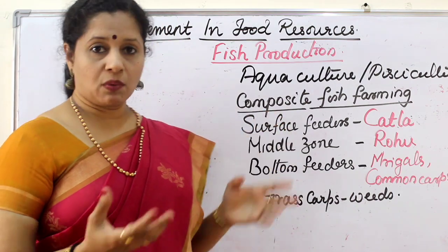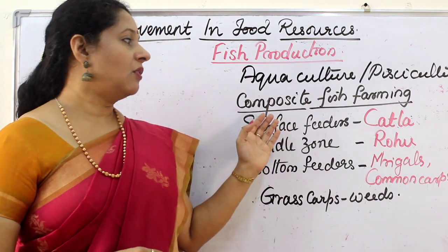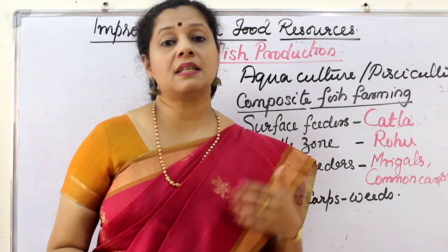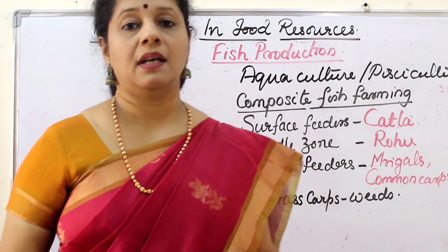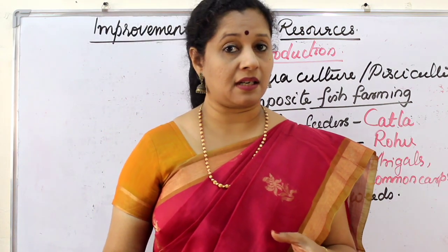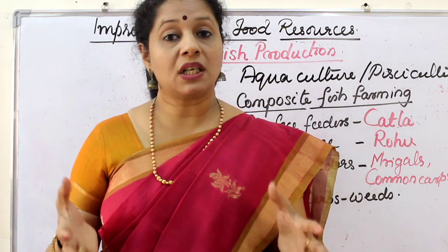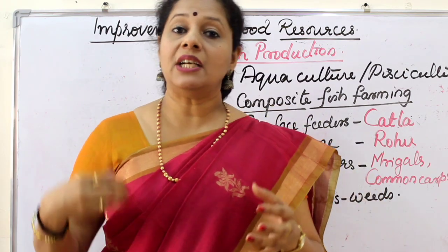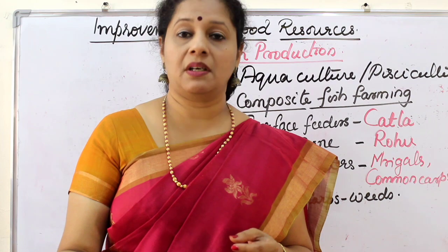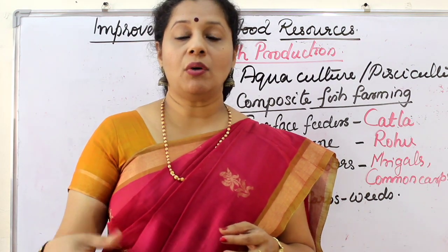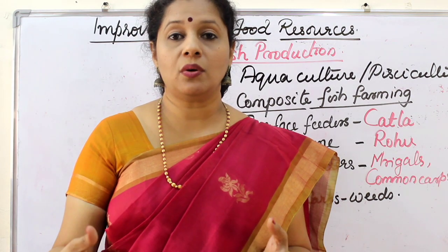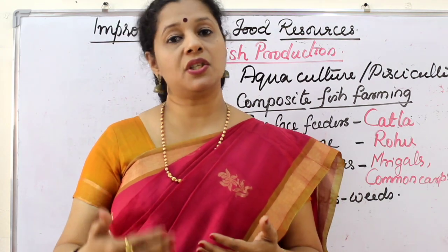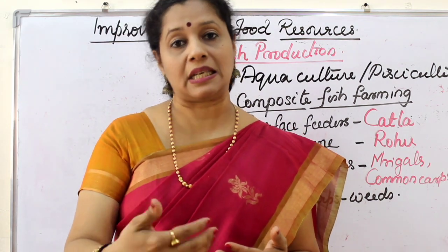Fish farming can be done in different ways to increase yield. The first is in combination with paddy fields. Rice is a kharif crop, requiring waterlogged conditions during monsoon. So we can introduce fish into the paddy field so that the farmer gets double yield — from both rice and fish. We must ensure the fish does not disturb or eat the plants.